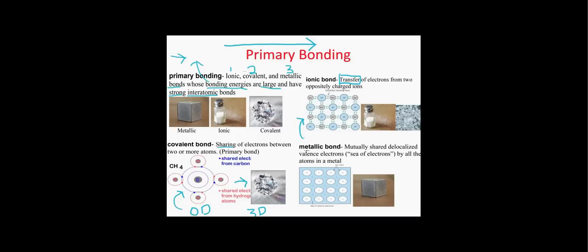Our third type of primary bonding is metallic bonding. Metallic bonds are defined as the mutually shared delocalized valence electrons by all the atoms in a metal. Basically, all of the metal atoms donate their electrons to a common sea, so the electrons are no longer attached to any one metal cation — all the metal cores are positively charged. It is essentially an electron glue that holds the entire thing together.